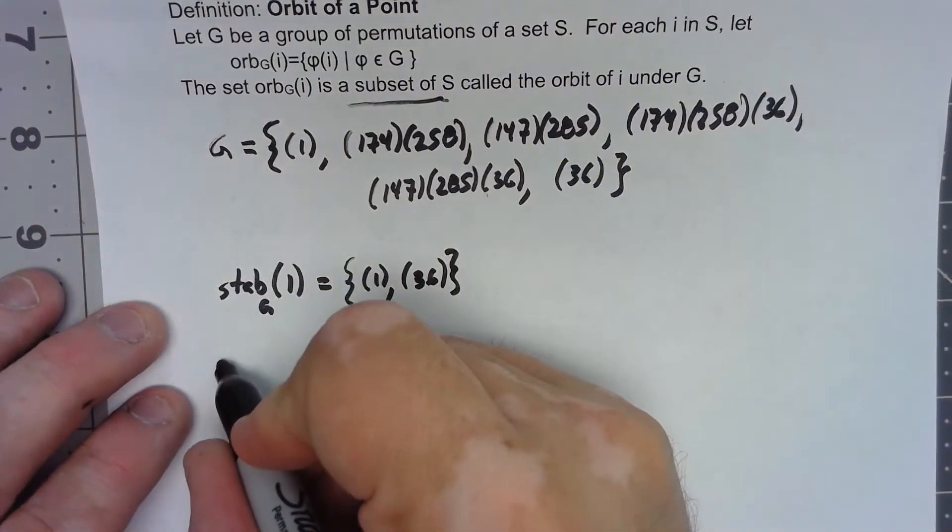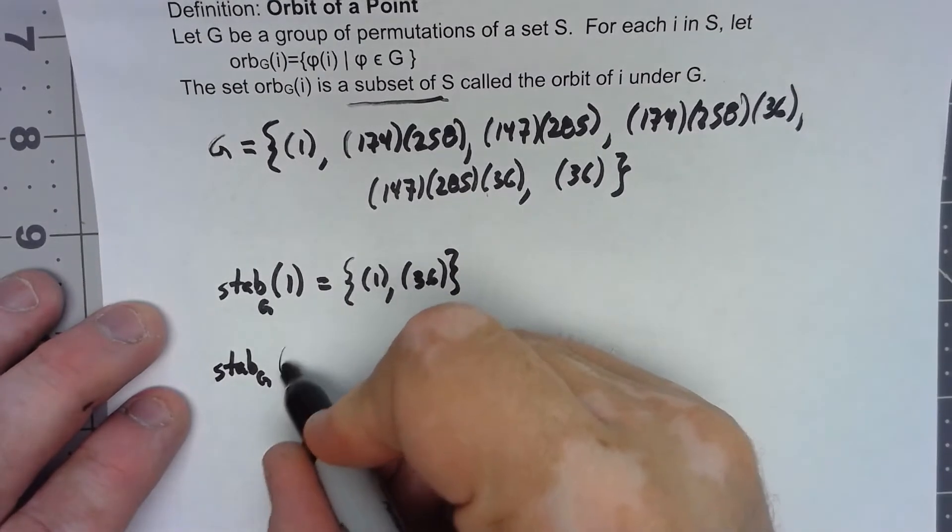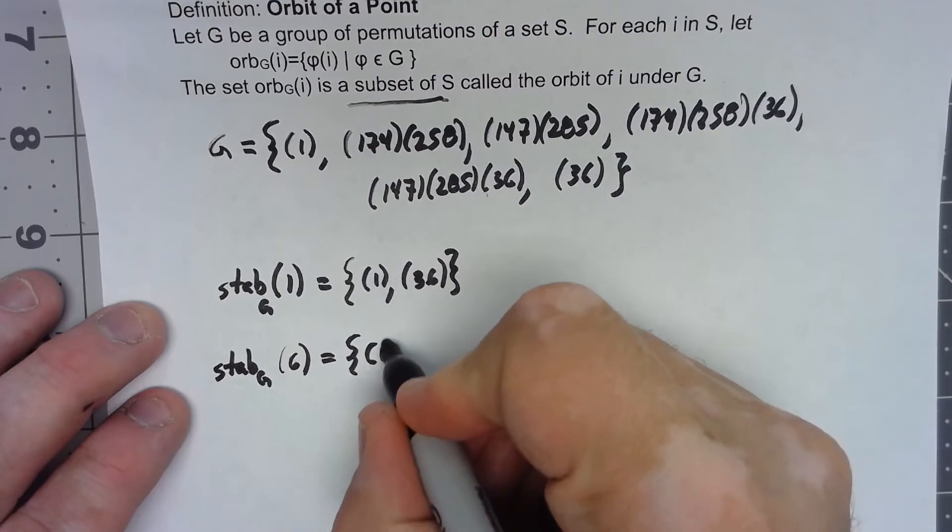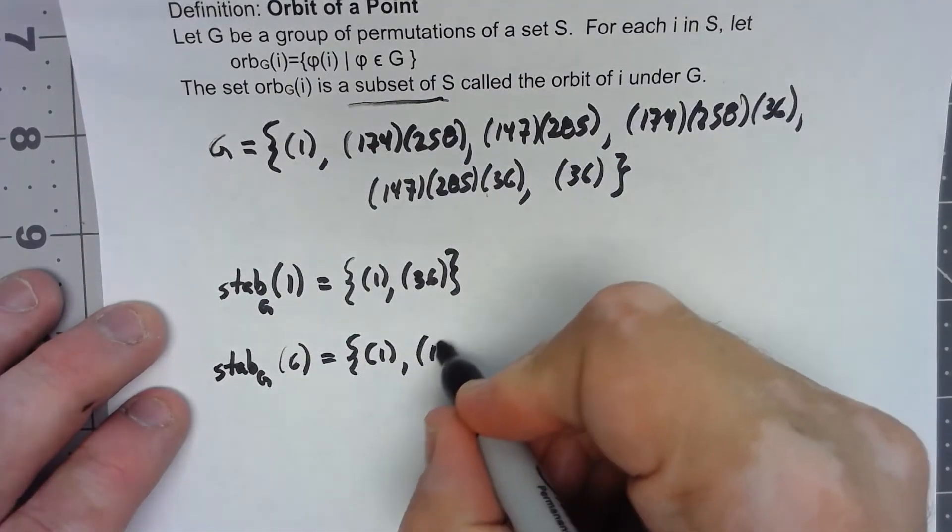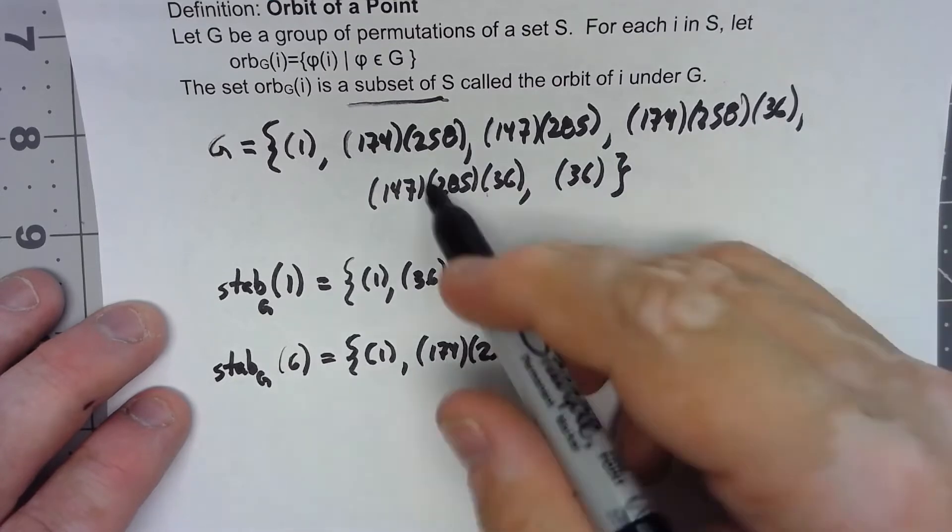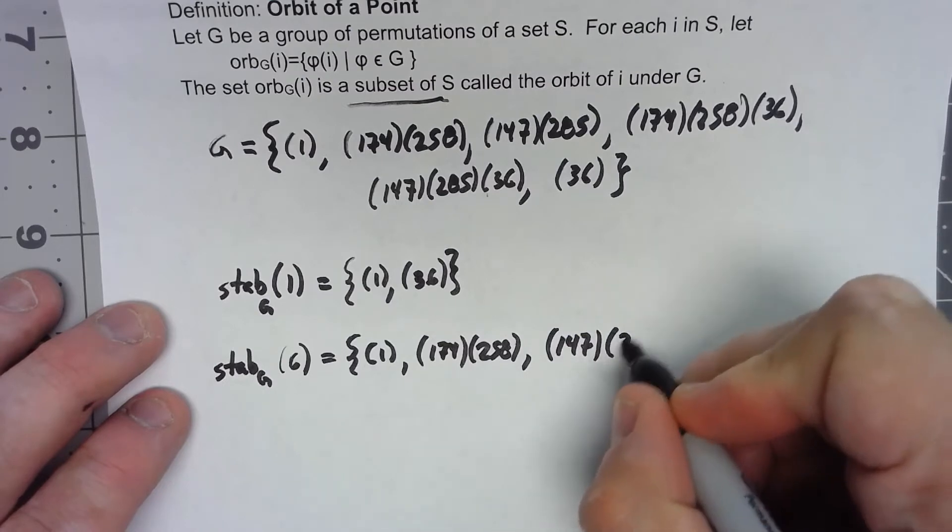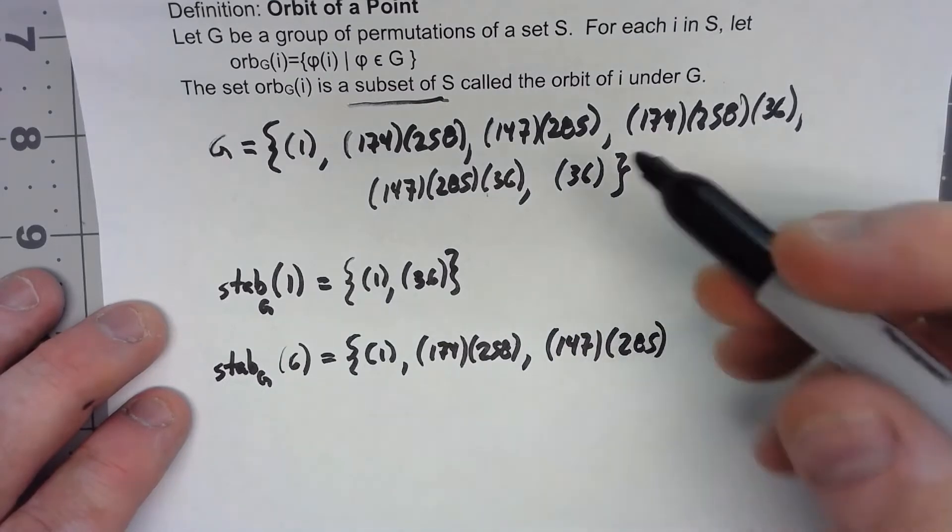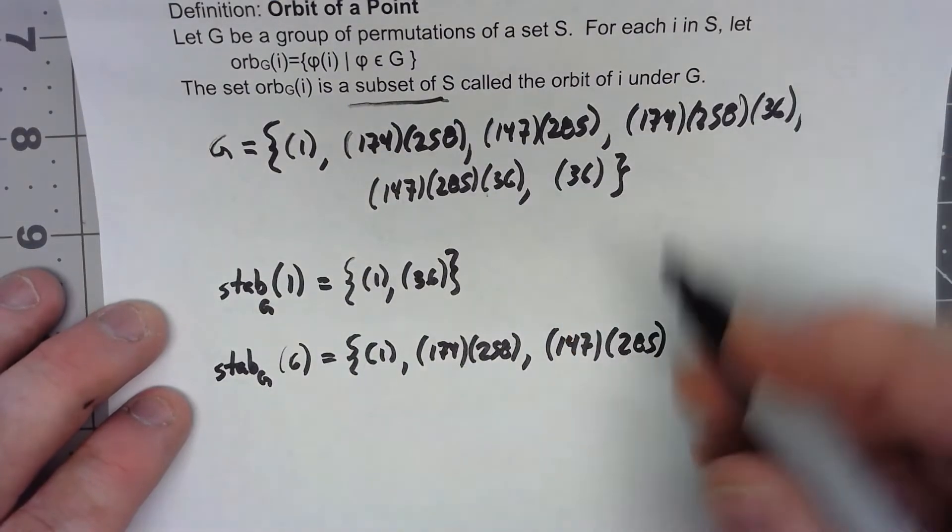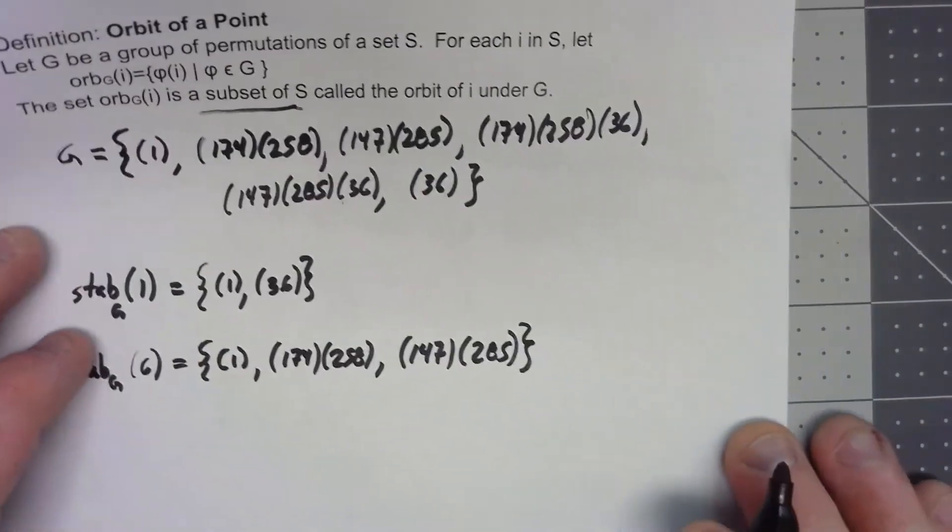Let's try another one. What is the stabilizer in G of six? The identity is certainly in there. That 174258, that doesn't affect six. 147285, that doesn't affect six. But this one does, this one does, this one does. Okay, that's the stabilizer.